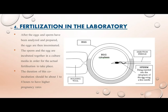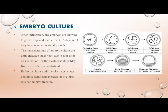Step 4 — Fertilization in the Laboratory: after the eggs and sperm have been analyzed and prepared, the eggs are inseminated. The sperm and egg are incubated together in a culture media for actual fertilization to take place. The duration of co-incubation should be about one to four hours to achieve higher pregnancy rates. Step 5 — Embryo Culture: after fertilization, the embryos are allowed to grow in special media for three to five days until they have reached optimal growth.